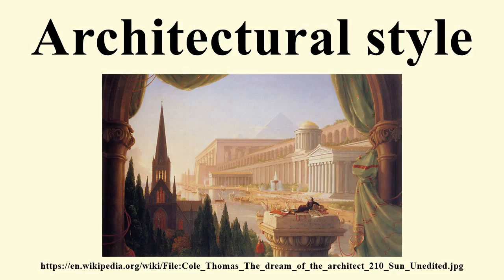Mannerism is notable for its intellectual sophistication as well as its artificial qualities. Mannerism favours compositional tension and instability rather than balance and clarity. The definition of mannerism, and the phases within it, continues to be the subject of debate among art historians. An example of mannerist architecture is the Villa Farnese at Caprarola, in the rugged countryside outside of Rome. The proliferation of engravers during the 16th century spread mannerist styles more quickly than any previous styles.